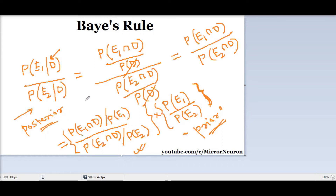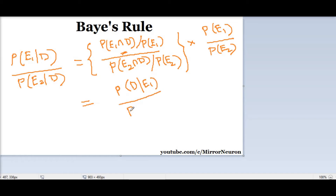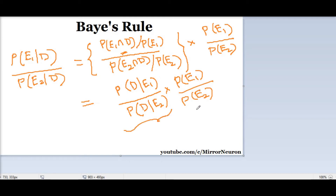Let us look into one more example so that this concept becomes clear. I have neatly written the formula again. If you observe, this portion is nothing but the conditional probability given E1 as the sample space, so we can write this as probability of D given E1, divided by probability of D given E2 — this is just the situation flipped. And this is the probability of E1 divided by E2, which is again the conditional probability in terms. This is the prior and this is the posterior.